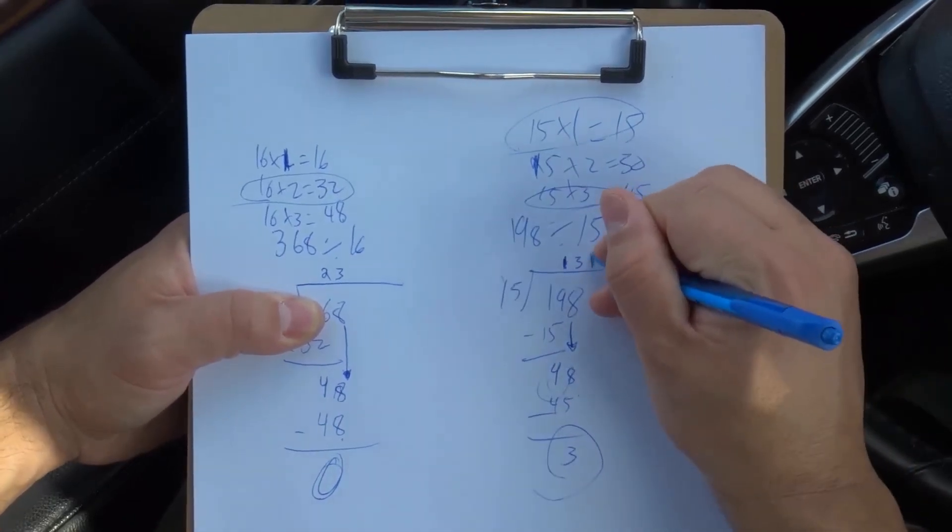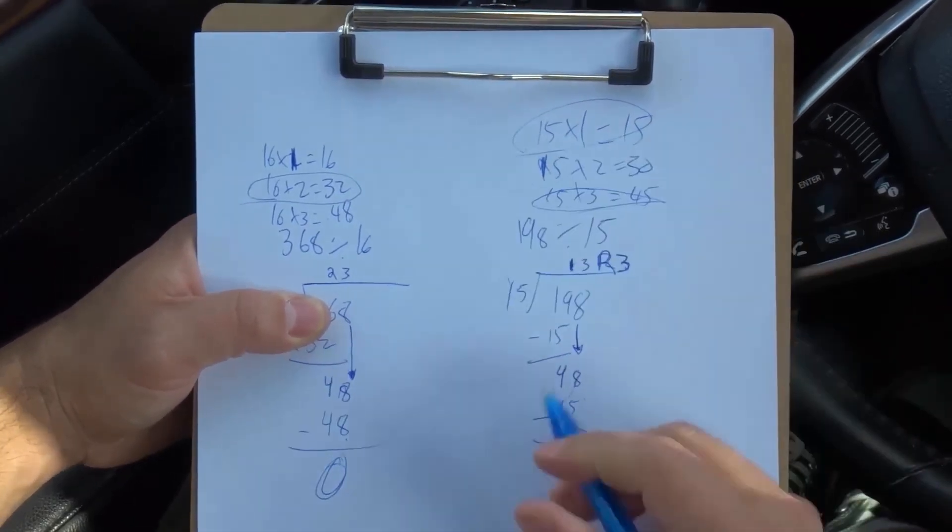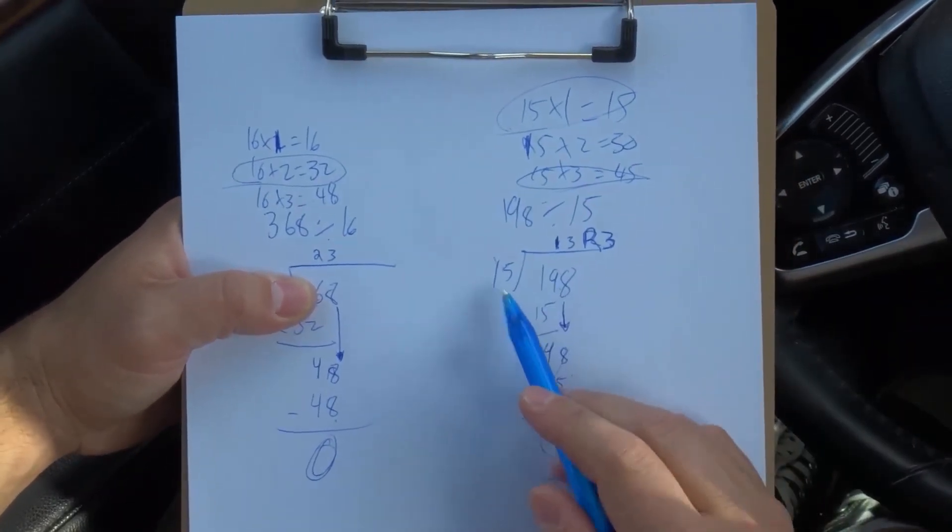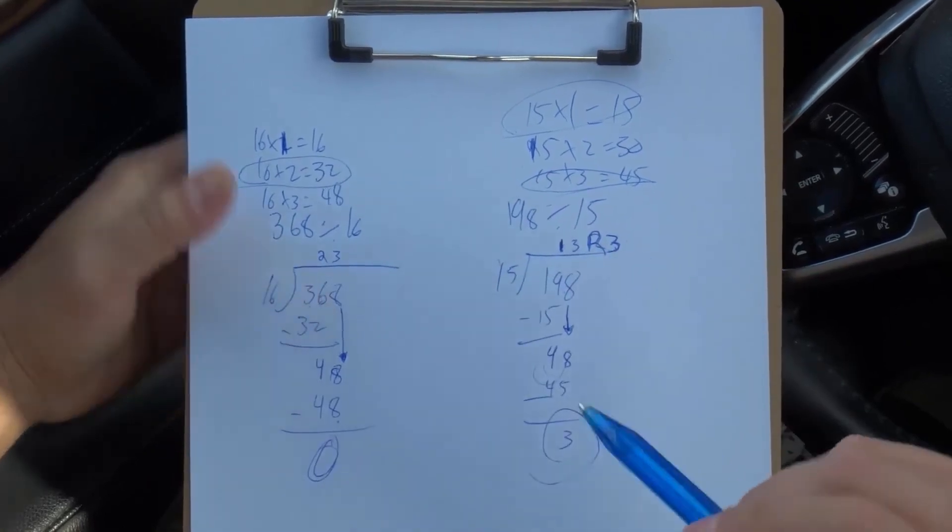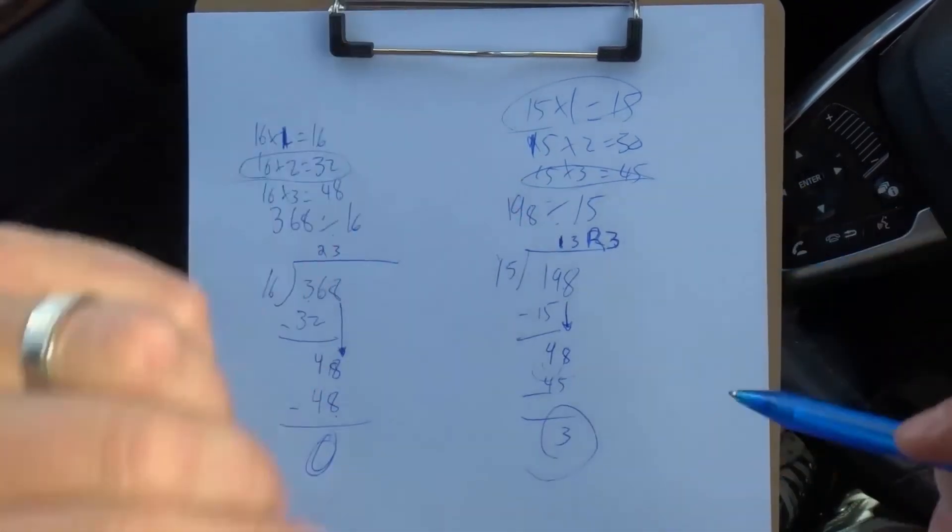So remainder 3. So the answer for 198 divided by 15 is 13, remainder 3. 3 is left over. That's it. That is how to do long division.